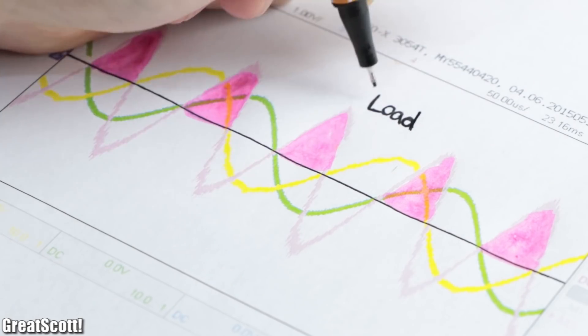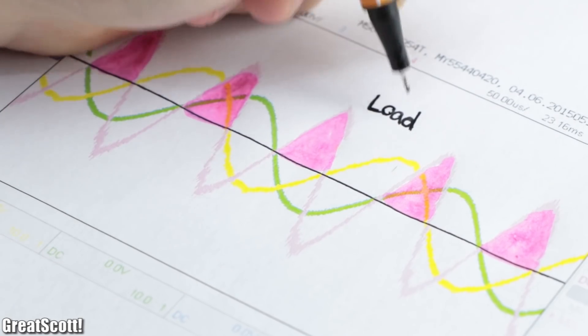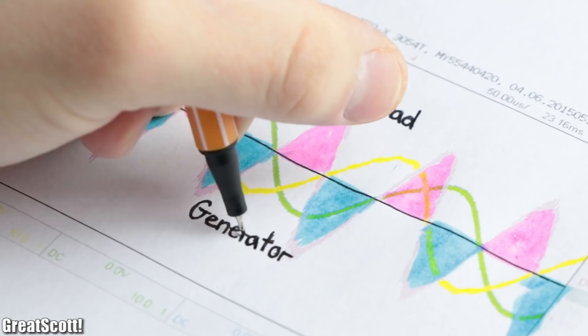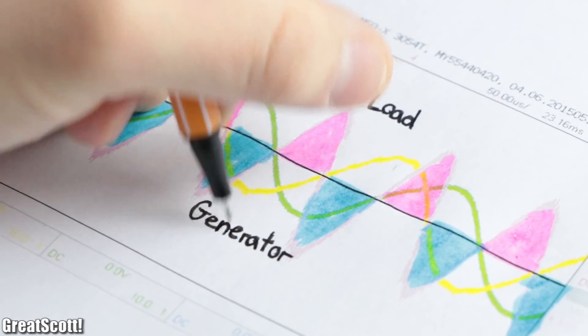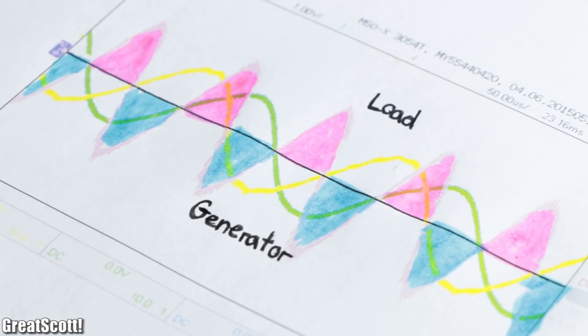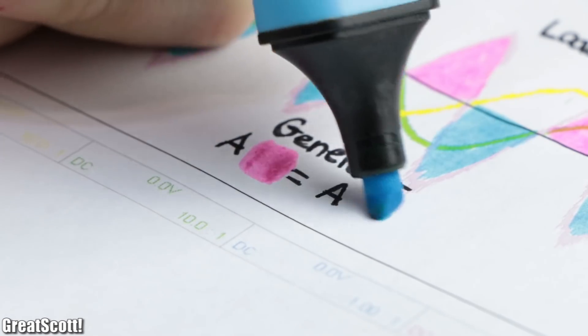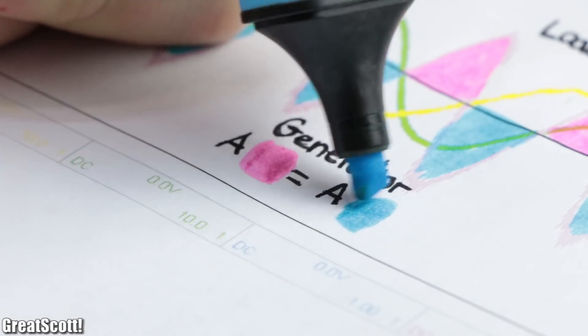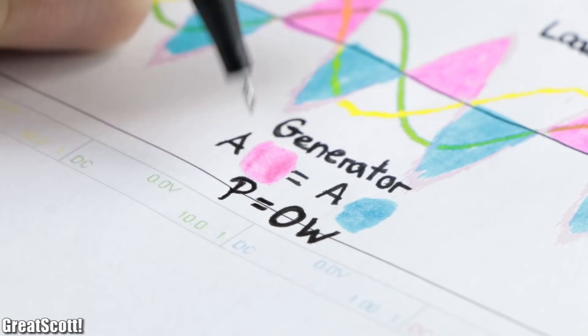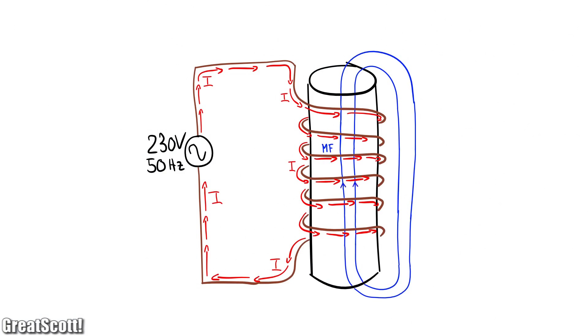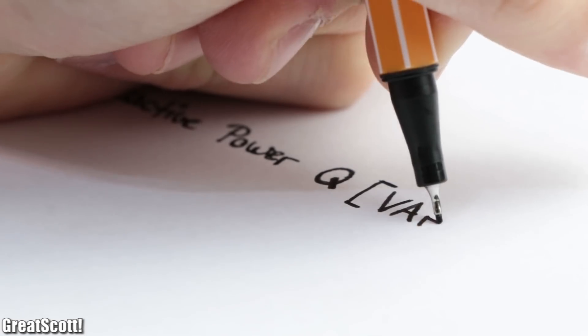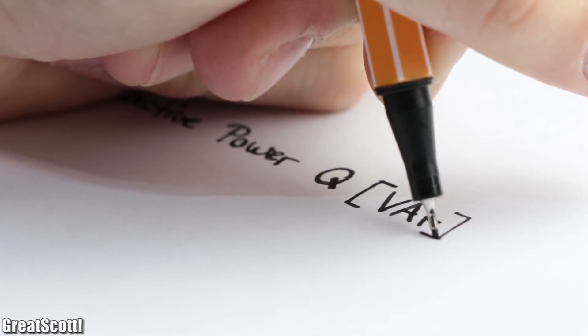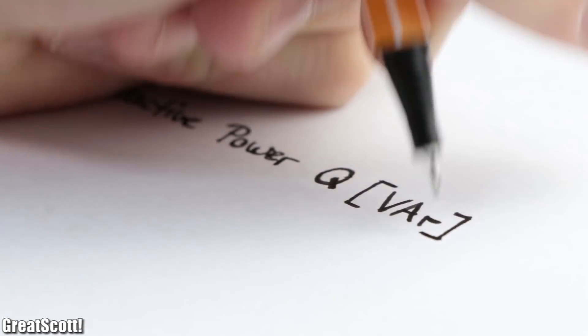That means in the positive areas the inductor acts as a load by consuming power, and in the negative areas the inductor acts as a generator by supplying power. And since the areas are about the same, the average power draw of the inductor is basically zero. So no true power is being used. All the inductor does is oscillate power between itself and the power source through its electromagnetic fields. And this power is known as reactive power with the unit volt-ampere reactive.